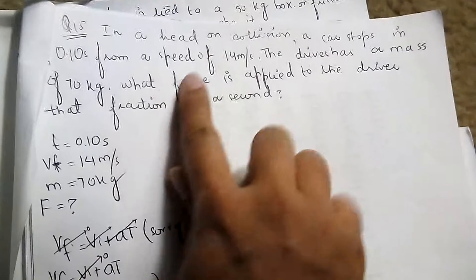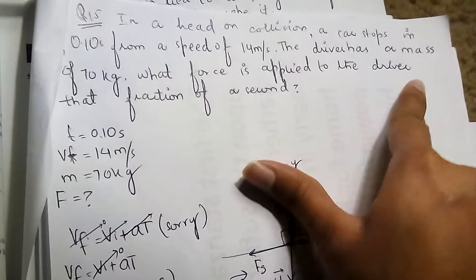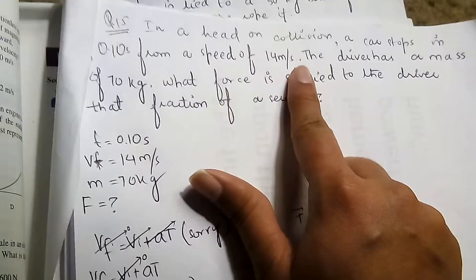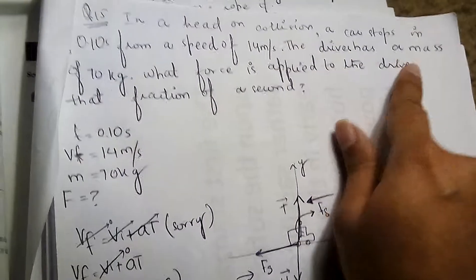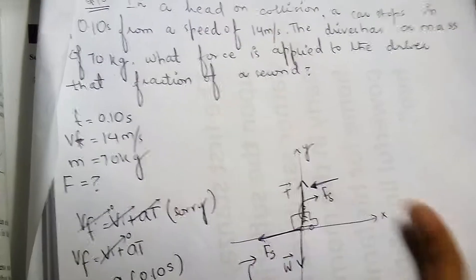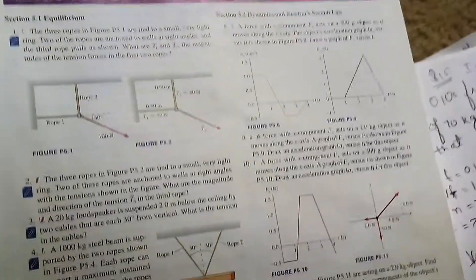In this problem, I have a question in my hand causing a car to drive in 0.10 seconds from a speed of 14.0 meters per second. The driver has a mass of 70 kg, what force is applied to the driver for a fraction of a second? So this is the problem.